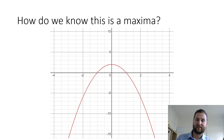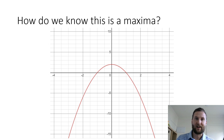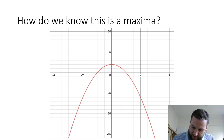So let's go back to this question: how do we know this is a maxima? I have a graph in front of me, so I can look at it and say that looks like a maximum. But how can we do it without a graph? Let's go through and sketch some tangents and estimate some tangent values.